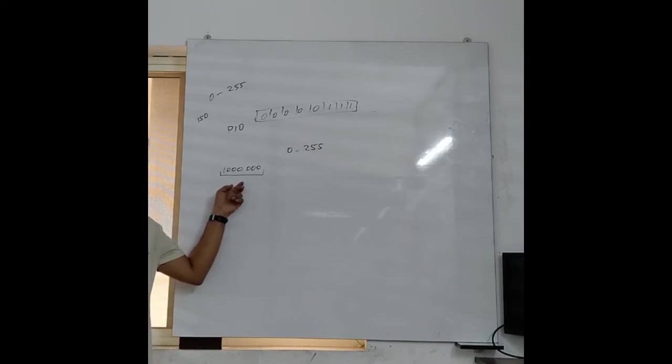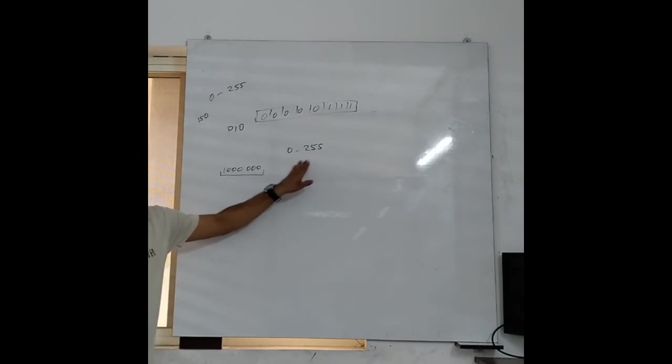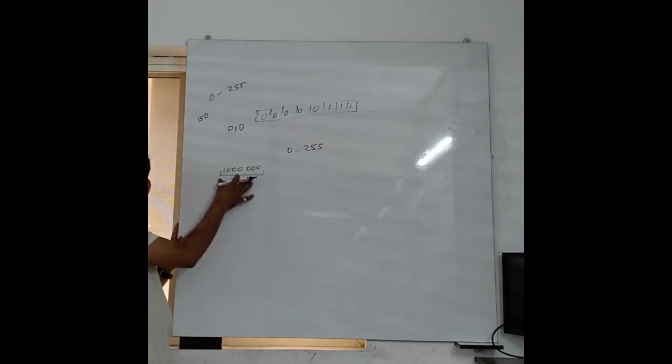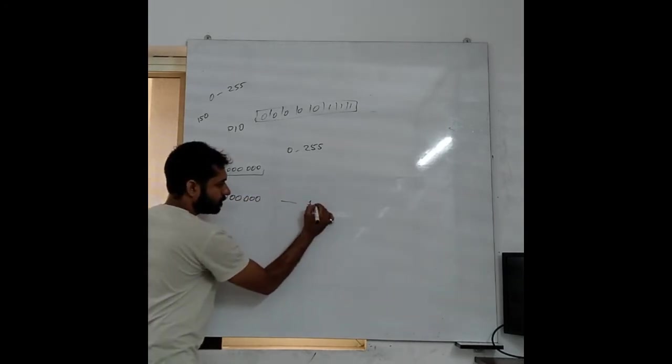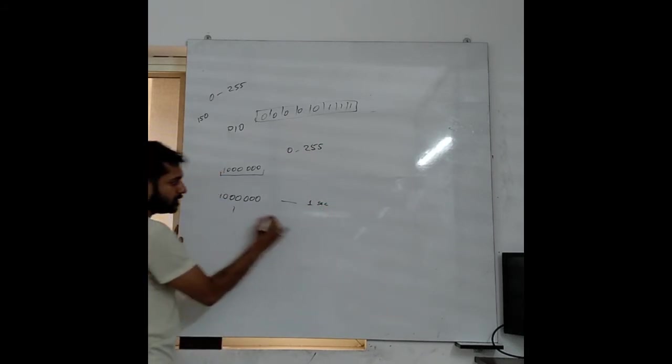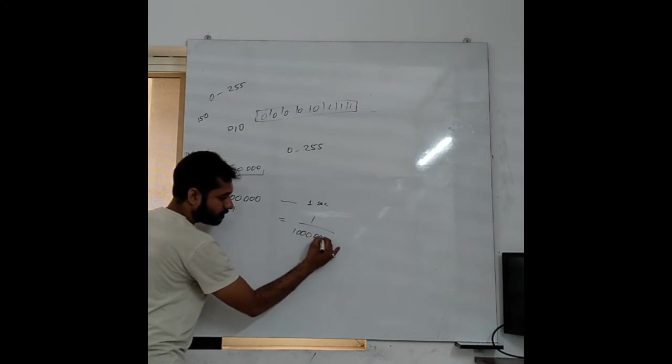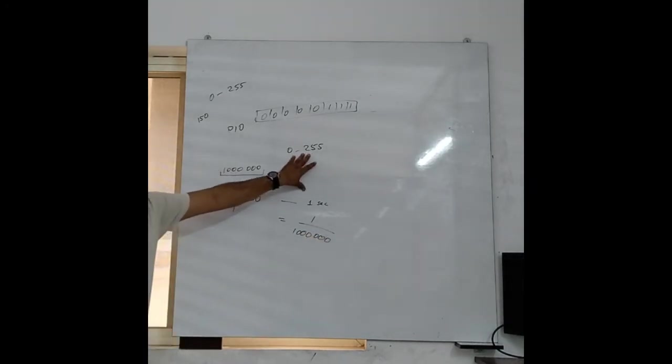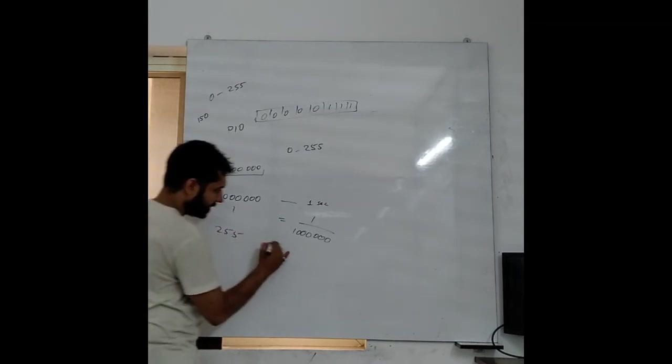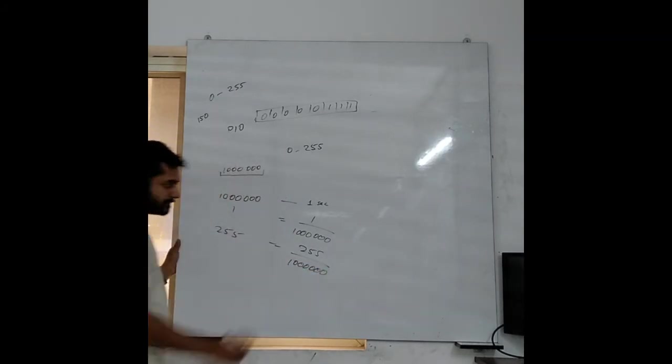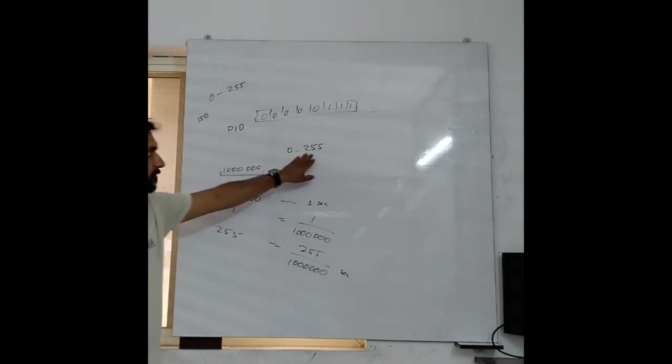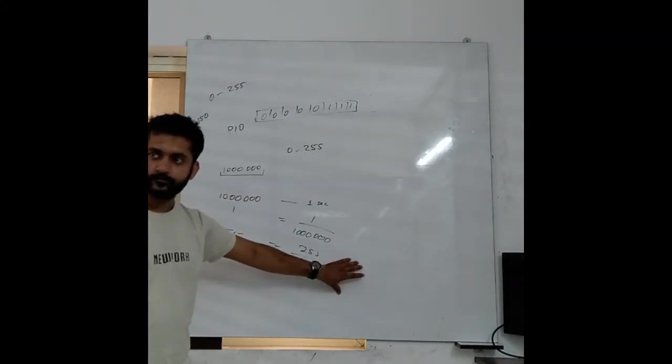So for 0 to 255, as soon as I reach 255, how much time has passed? I can calculate it from here. I know this is the frequency. So I will say for 1 MHz, time equals to 1 second. For 1 it is 1 by 1 MHz, this many seconds. So as soon as my value is 255, that means this much time has passed.